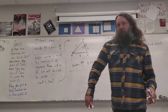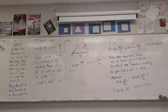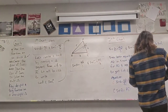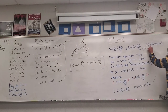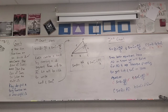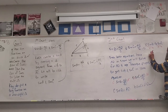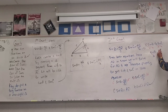Now let's divide both sides by C and by B. The C's cancel on the left side and the B's cancel on the right side, and we're left with: sine of B divided by length B equals sine of C divided by length C.